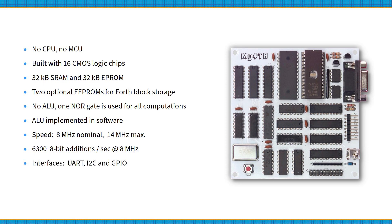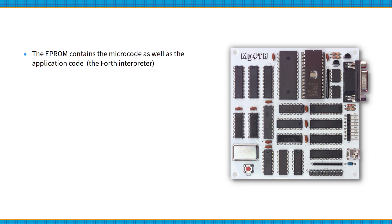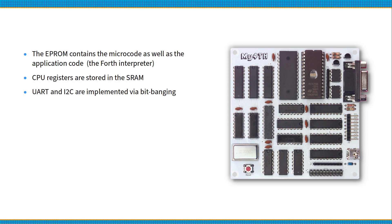The board has one UART, one I2C, and one parallel GPIO interface. The size of the board is only 10 x 10 cm. The EEPROM contains the microcode as well as the application code. CPU registers are stored in the SRAM. The UART and the I2C interface are implemented in software and are therefore relatively slow.